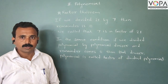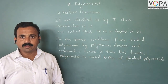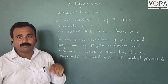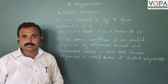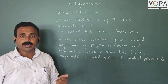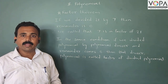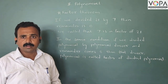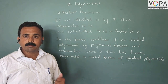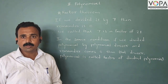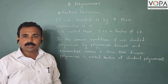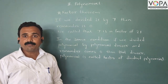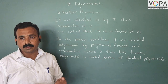Dear students, today we are taking the factor theorem. The factor theorem is: you know that if any number is divided by another number and the remainder is 0, then the divisor is called a factor of that dividend.